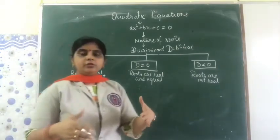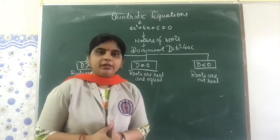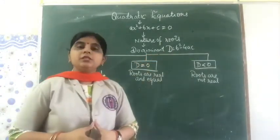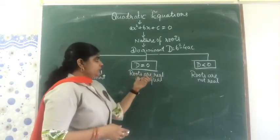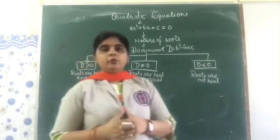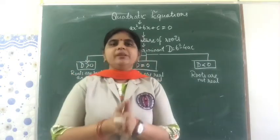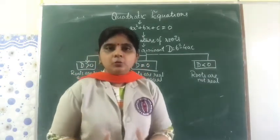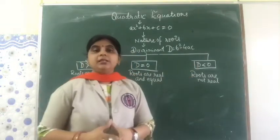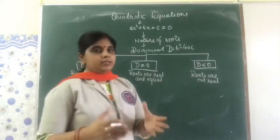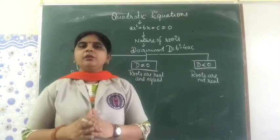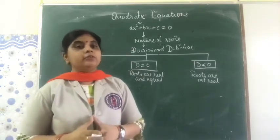When D > 0, you are going to get 2 different real roots. Similarly, if you calculate D = 0, then we get the roots as real and equal — you will have real roots but the 2 roots will be repeated. And if in case you are getting D < 0, that is some negative number, in that case the roots will not be real.